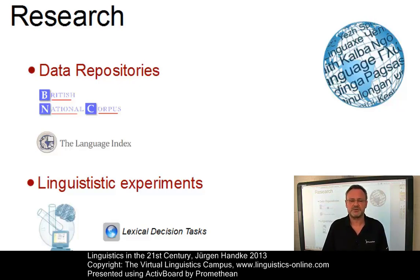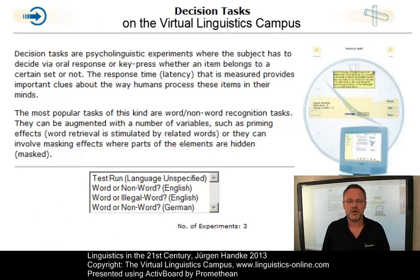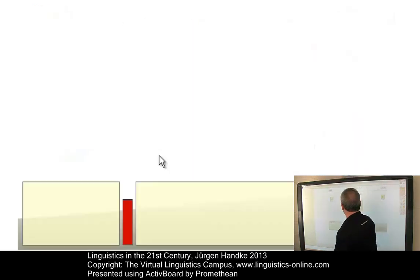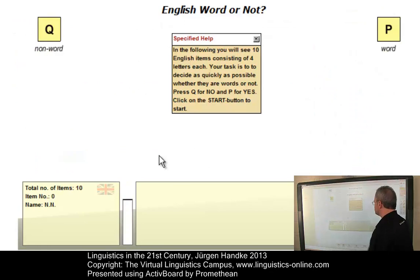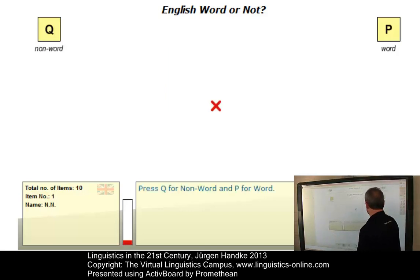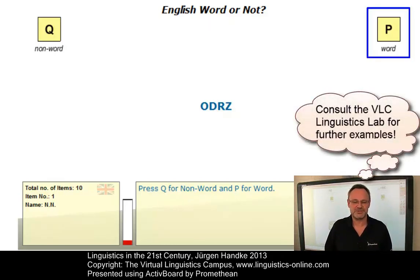Here is an example from psycholinguistics. Lexical decision tasks — tasks where you have to decide whether something is a word or a non-word — can easily be implemented on a computer. On the virtual linguistics campus, you have a large number of such experiments. You will be presented a word in the center of the screen and then you have to decide whether it's a non-word or a word. You can use the linguistic laboratory on the virtual linguistics campus to find out how these experiments work in detail.